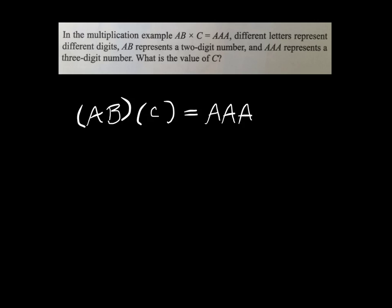The first thing I did to realize what I'm about to show you is I wrote this as 100A plus 10A plus A. And then I realized I could factor out an A. So this is A times 111. That's the left - AAA is A times 111.